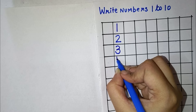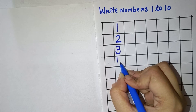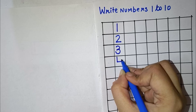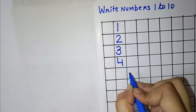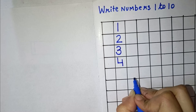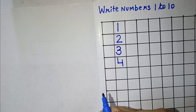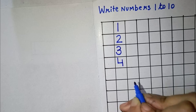Now the next number is 4. So for 4, we have to draw a standing line, a sleeping line, and again a standing line. This makes number 4.